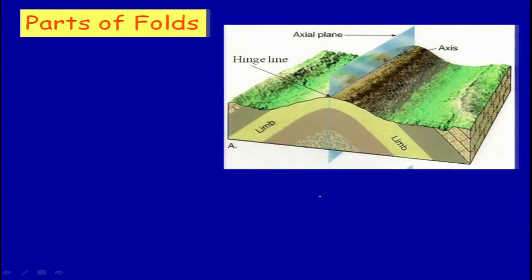Now, parts of folds: as I discussed, what is anticline and syncline. If you look at the anticline, we have different parts — two limbs, the hinge line, the axial plane, and the fold axis. These are important because, for example, if we are asked to put in a tunnel, it is extremely important to know what is the axis of the fold and in which direction it goes. Because in nature it will not always be possible that you will have a very straight hinge line.